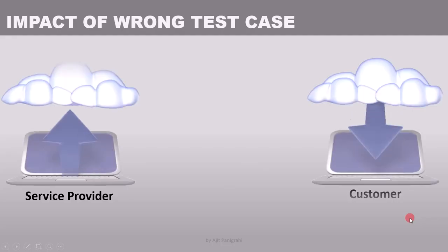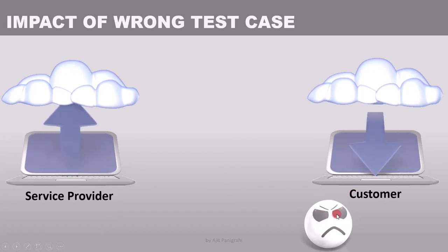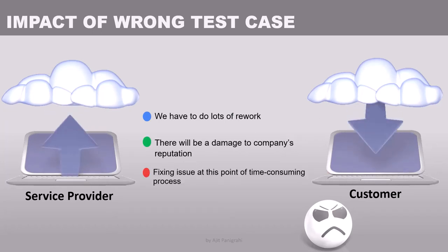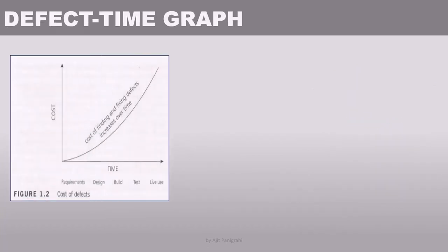If the product is tested with wrong test cases, the same flawed product will be delivered to the customer, leading to failures in the field. At that point, fixing the issue requires lots of rework, damages the company's reputation, and is very costly and time-consuming. This is illustrated by the famous defect cost graph, which shows that the later a defect is found, the more expensive it is to fix. Finding a defect in the requirement stage costs the least; if found during live use, you pay the most.